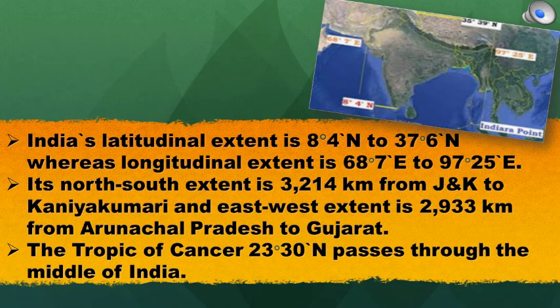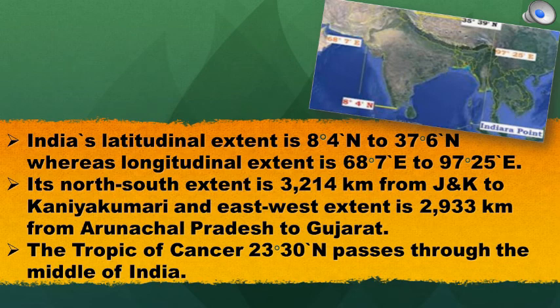India's latitudinal extent is 8°4'N to 37°6'N, whereas longitudinal extent is 68°7'E to 97°25'E. Its north-south extent is 3,214 km from Jammu and Kashmir to Kanyakumari, and east-west extent is 2,933 km from Arunachal Pradesh to Gujarat. The Tropic of Cancer at 23.5° north passes through the middle of India.